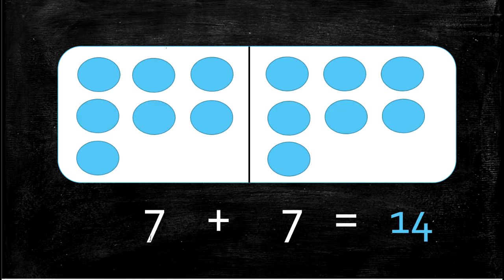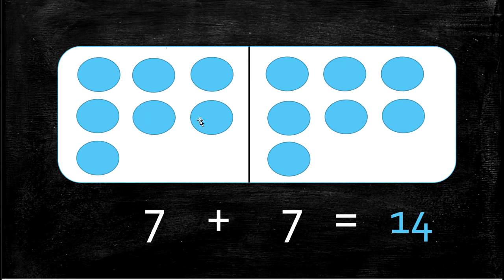The next double is 7 plus 7 equals 14. We have 1, 2, 3, 4, 5, 6, 7 plus 1, 2, 3, 4, 5, 6, 7. So 7 here plus 7 here equals how many all together? 1, 2, 3, 4, 5, 6, 7, 8, 9, 10, 11, 12, 13, 14 all together.